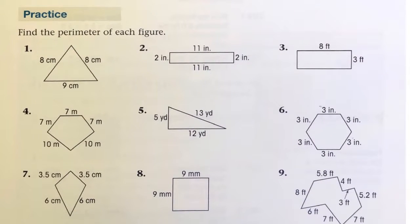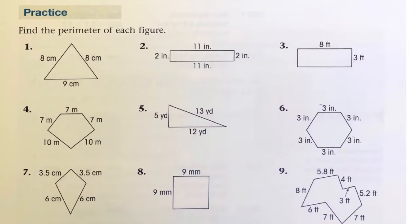Let's find the perimeter for each of these figures. This is an isosceles triangle here. We've got two sides being 8 and one side 9. So that's going to be 16 plus 9 to give us 25 centimeters.